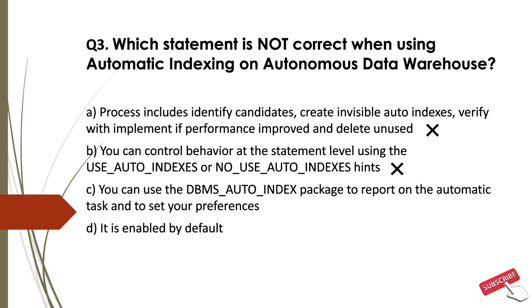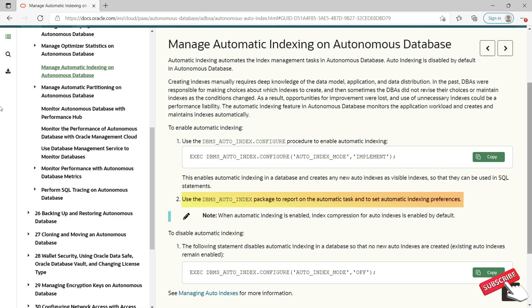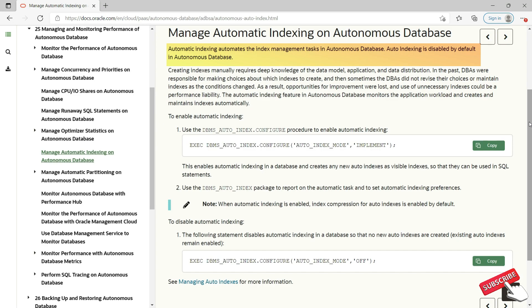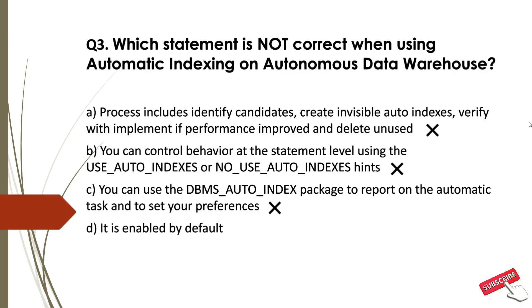Option C: You can use the DBMS_AUTO_INDEX package to report on the automatic task and to set your preferences — this is also true, hence incorrect as an answer. Option D: It is enabled by default. Auto-indexing is actually disabled by default in Autonomous Database. So Option D is a false statement — hence the correct choice. The correct option for Question 3 is Option D.